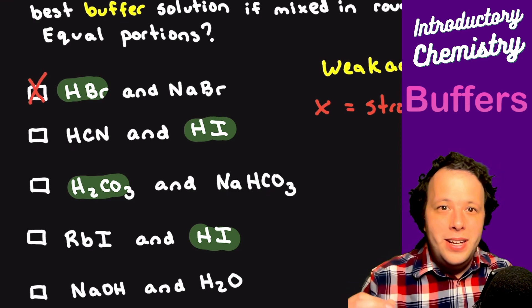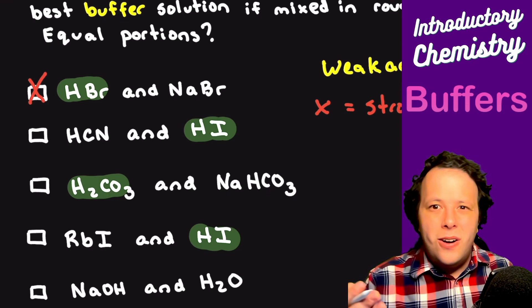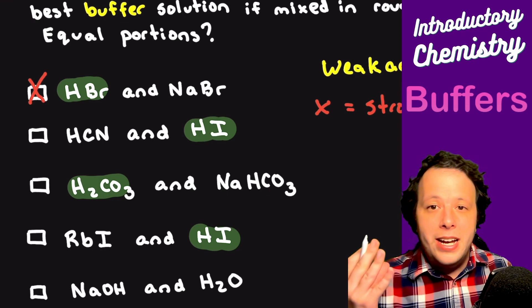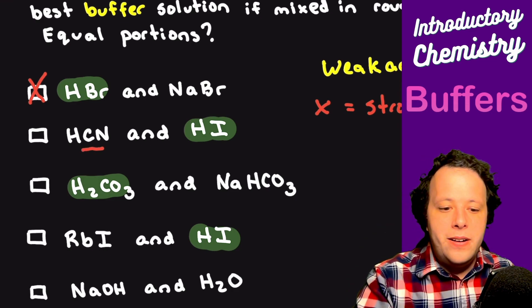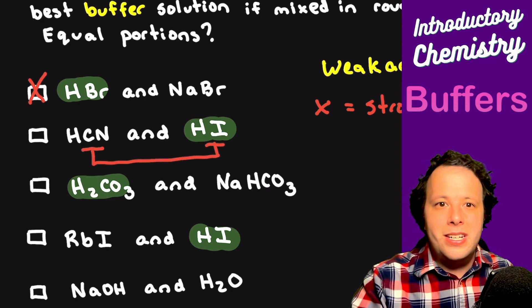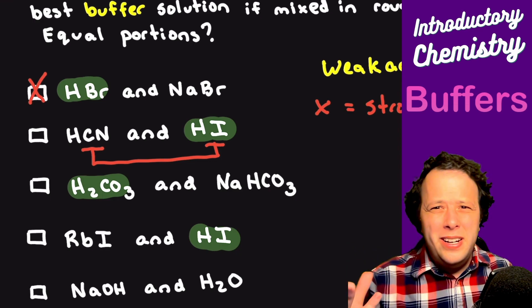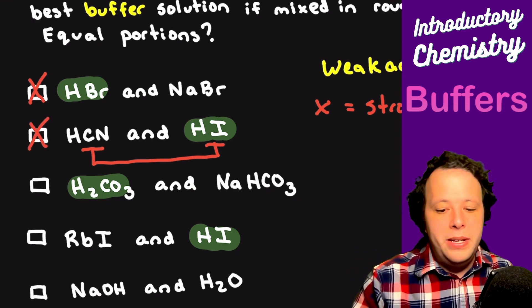If I have the next one, HCN and HI, are they a pair? Remember they have to differ by a single proton. If I compare these two molecules, they differ by a carbon and a nitrogen. That's a big no. That's not going to be okay.